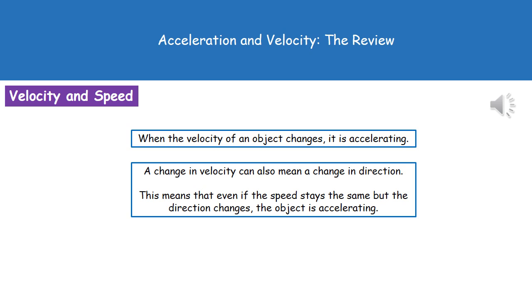When we're talking about a change to the velocity of an object, we're actually talking about an acceleration. When we are talking about a change in velocity, that can also mean a change in direction. So what that means is even if our speed is staying the same, it's moving at a constant speed of say 30 miles per hour.